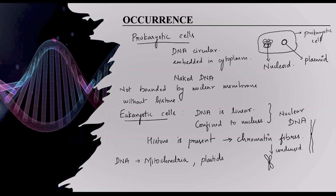Not only in the nucleus — we can also see DNA in mitochondria and plastids. This DNA is called extra nuclear DNA or organelle DNA. In prokaryotes, histone is not present, but in eukaryotic cells histone is present. The DNA found in mitochondria and plastids in eukaryotic cells is called extra nuclear or organelle DNA.